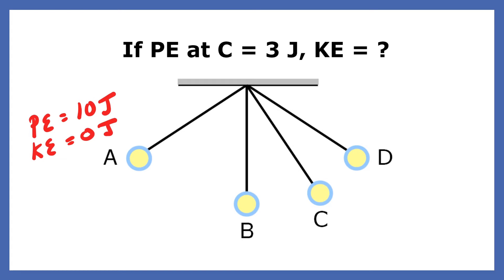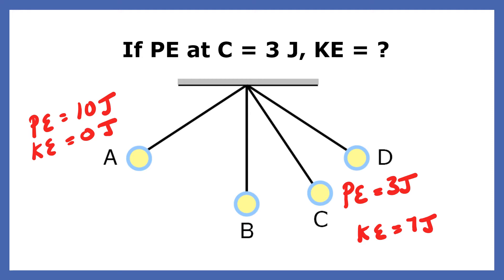If the potential energy at C is 3 joules, what's the kinetic energy at C? Since there is no friction on this pendulum, when the potential energy is 3 joules, the kinetic energy has to be 7 joules for the pendulum to maintain a total energy of 10 joules.